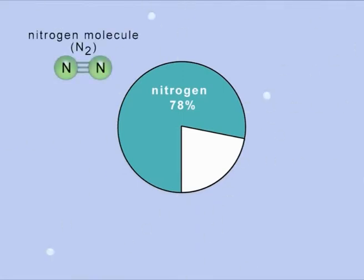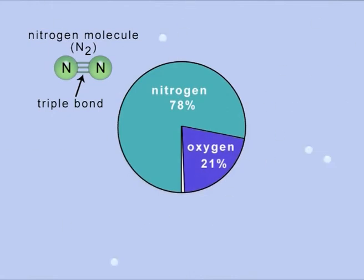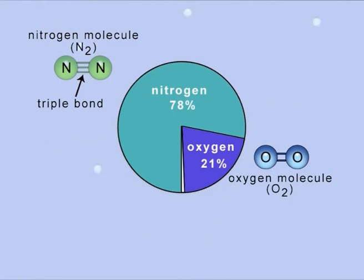Nitrogen is relatively inert because atoms of nitrogen in a molecule of nitrogen gas are bonded strongly to one another, and so tend not to react with things around it. Nearly 21% of air is made up of oxygen, the gas living creatures need to breathe in order to survive.